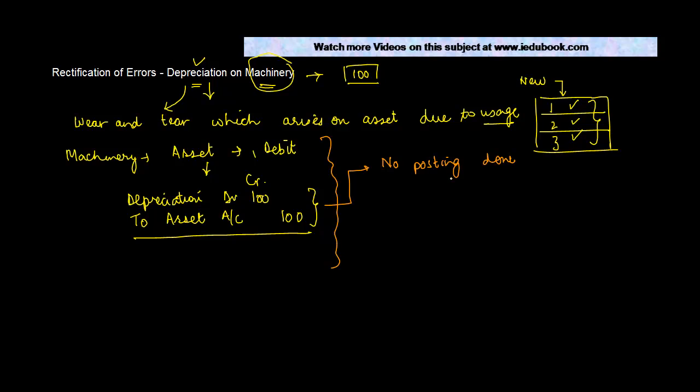So simply what you need to do is just debit the depreciation account by this number, 100, and credit the asset account by 100. Let's take second situation - not posted to machinery account.